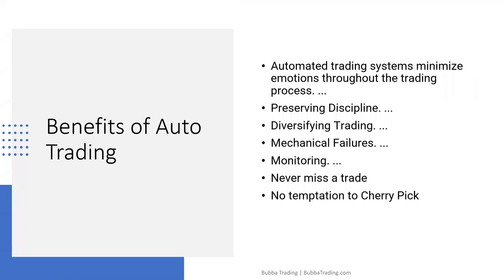Auto trading — this is what we call a letter of direction product. Our partner CTG handles everything. It's an automated system that minimizes your emotions, saves your discipline, diversifies your trading, avoids mechanical failures, and means you never miss a trade. You don't have the same temptation to cherry pick trades. Our opinion is worthless when it comes to machines and what we're doing day to day — opinions are worthless. If you're going to trade a mechanical system, you take them all.